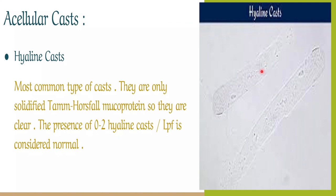Remember that hyaline casts are the most common type of cast seen in urine and can be seen in both physiological and pathological conditions. Up to 0 to 2 per low power field is considered normal. Causes such as dehydration, fever, heavy exercise, or proteinuria all lead to precipitation of the Tamm-Horsfall protein and formation of this cast. Thank you for watching — please like, share, and subscribe to the channel.